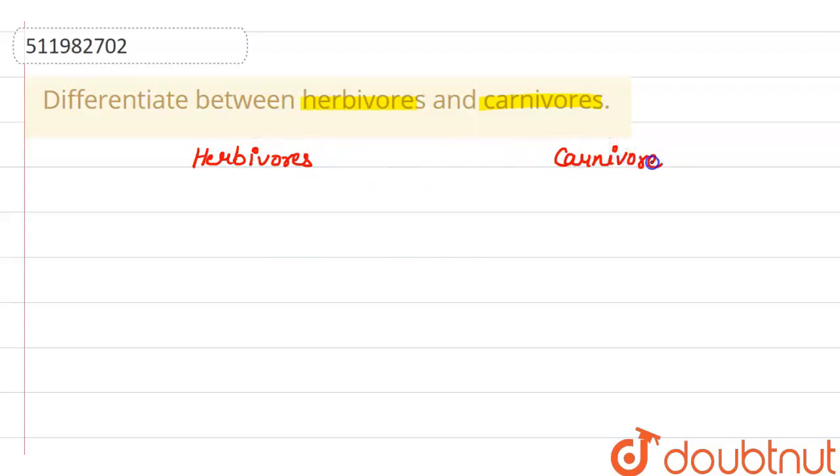So herbivores are also known as primary consumers. Who are herbivores? Primary consumers. And carnivores are secondary consumers.